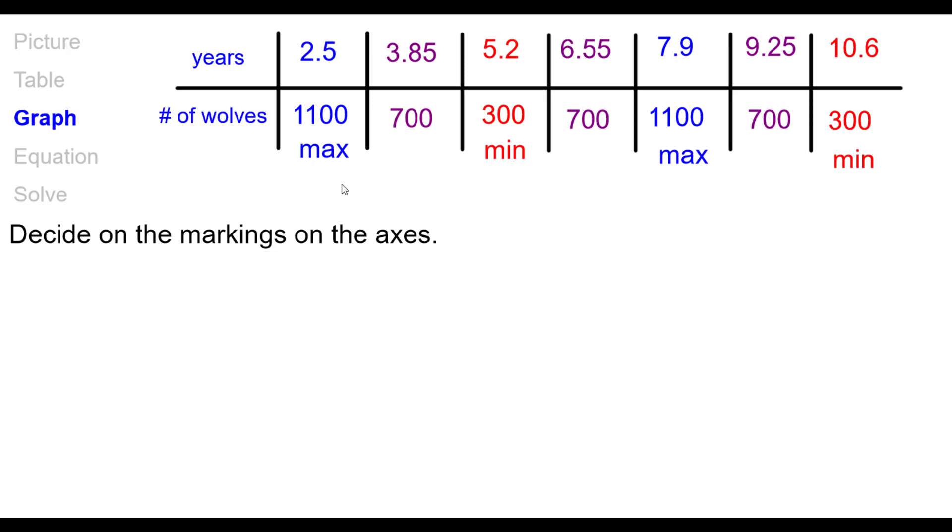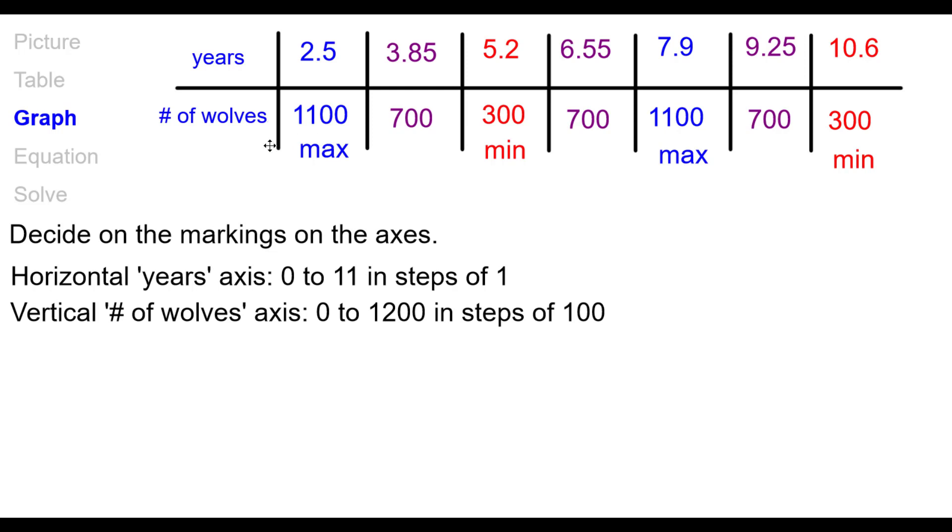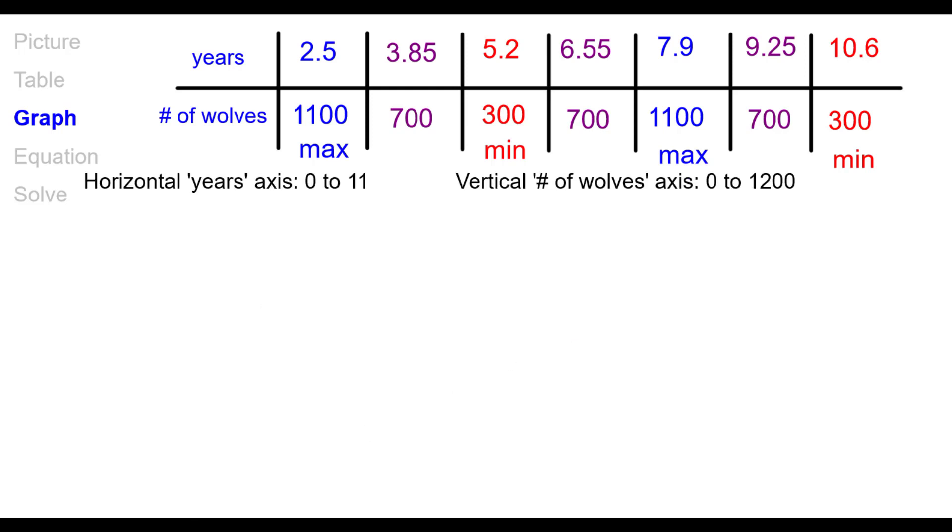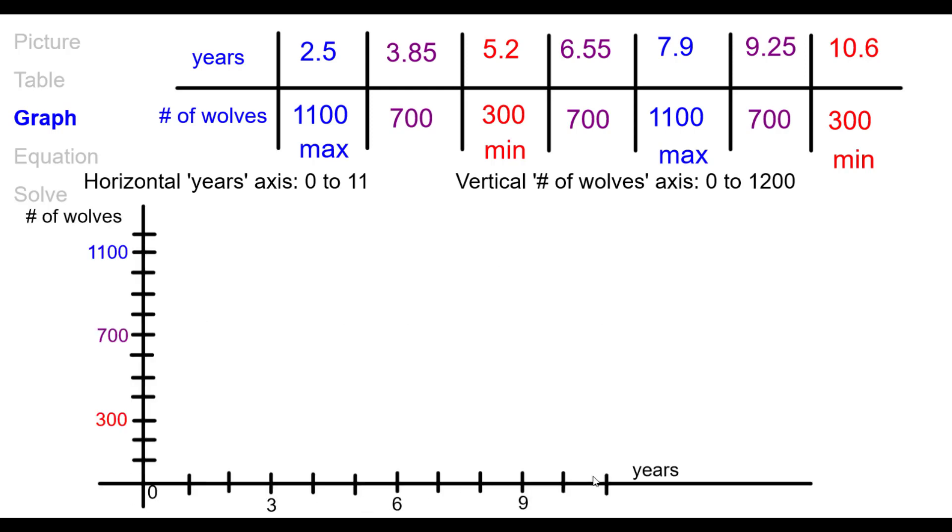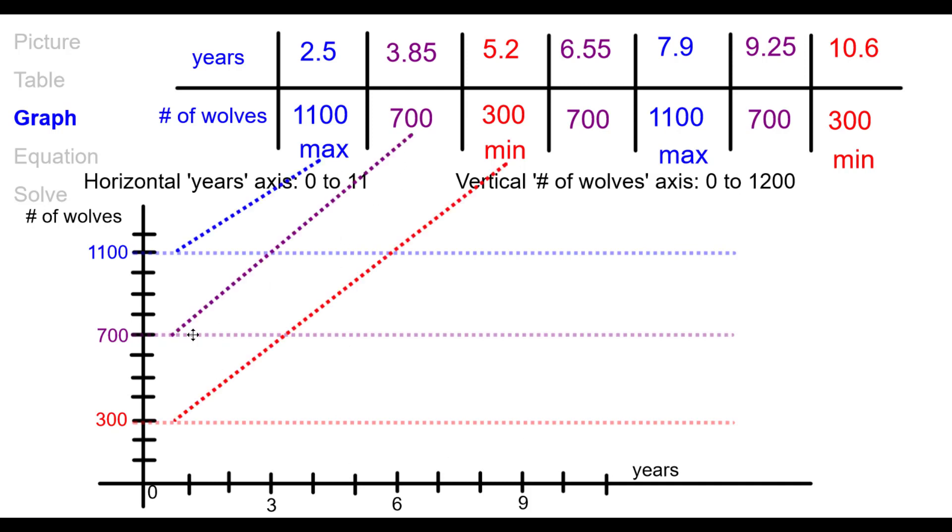So we're going to go ahead and graph this. So before we can graph it, we do need to decide on the markings on the axes. So for the horizontal years, I'm going to start at 0 and go to at least 11 in steps of one year. And the vertical number of wolves, I'll start at 0 and go up to at least 1,200. So we include the maximum in steps of 100 wolves. So let's go ahead and draw that. So you can see we went from 0 to 11 in years. And this is the number of wolves from 0 to at least 1,200. Pause as needed. Now what I did is I drew horizontal lines lightly at the max, the point of inflection, and at the minimum to help me graph this, kind of like lined graph paper, if you will.